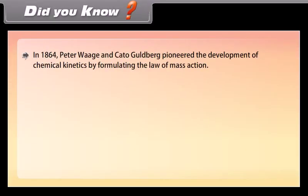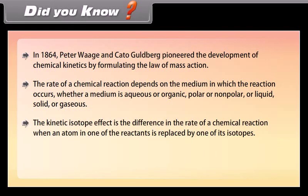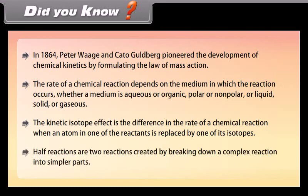In 1864, Peter Waage and Cato Guldberg pioneered the development of chemical kinetics by formulating the law of mass action. The rate of a chemical reaction depends on the medium in which the reaction occurs — whether the medium is aqueous or organic, polar or non-polar, or liquid, solid, or gaseous. The kinetic isotope effect is the difference in the rate of a chemical reaction when an atom in one of the reactants is replaced by one of its isotopes. Half reactions are two reactions created by breaking down a complex reaction into simpler parts.